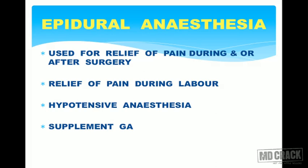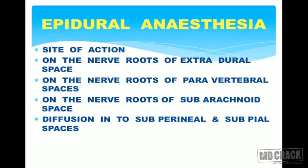Epidural anesthesia is used for relief of pain during and/or after surgery. It can be used as an adjuvant to general anesthesia, in combination with spinal anesthesia, or for purely pain management purposes. It can be used as patient-controlled analgesia postoperatively, in labor analgesia, and for hypotensive anesthesia — for example, in surgeries involving the upper abdomen where minute vascular surgeries require high potency anesthesia.